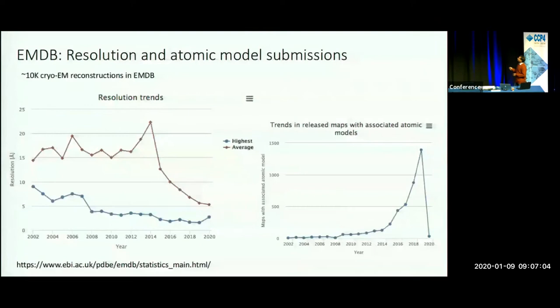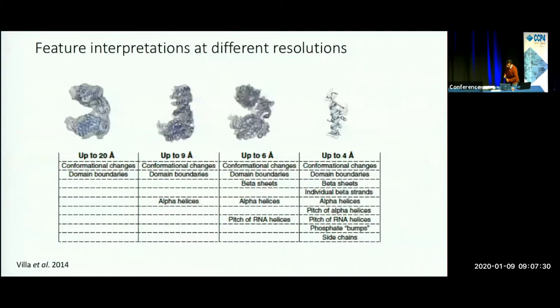One thing to note is that the average resolution is still around 5 to 5.5 angstrom. So there are a significant portion of EM maps which are low-resolution or intermediate resolution. As you can also imagine, the number of atomic models associated with EM maps is steadily increasing as well, especially after 2014, with a close to exponential rise. We have data at different resolutions, or a single map with different local resolutions.